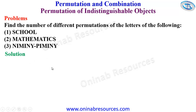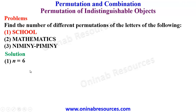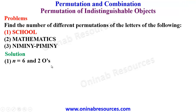We'll start with problem 1. For problem 1, we count 1, 2, 3, 4, 5, 6 objects, so our n is equal to 6. We have 1 S, 1 C, 1 H, and 2 O's, and a single L. Therefore, O is the only letter that is indistinguishable; the rest are distinguishable.